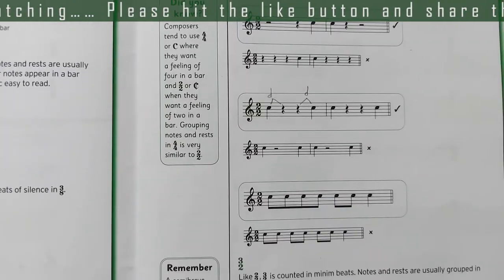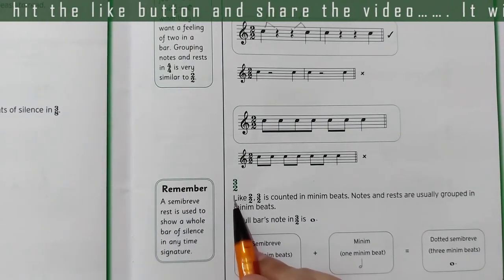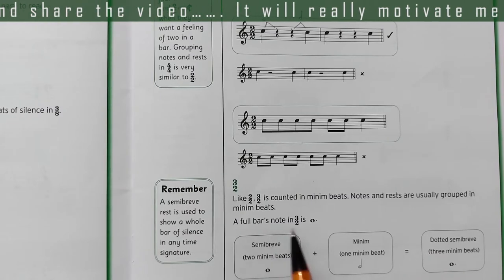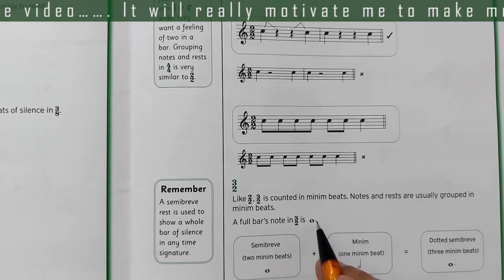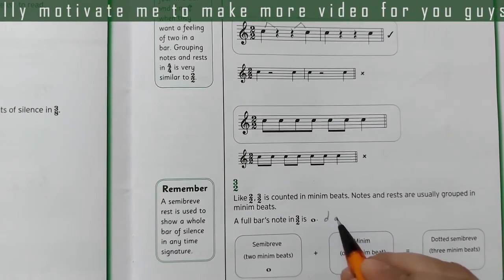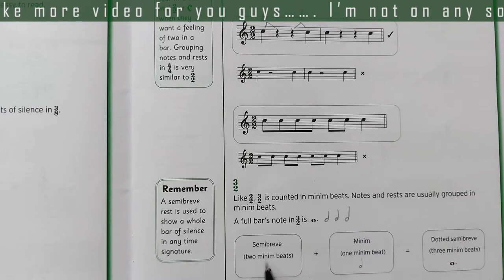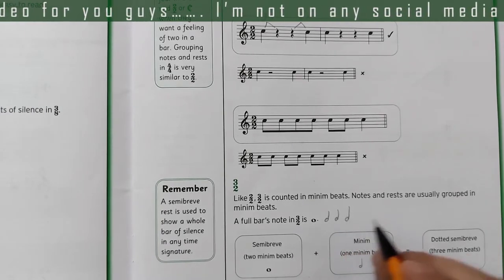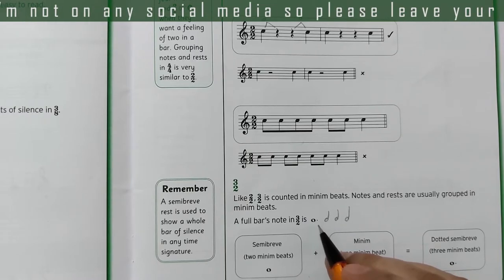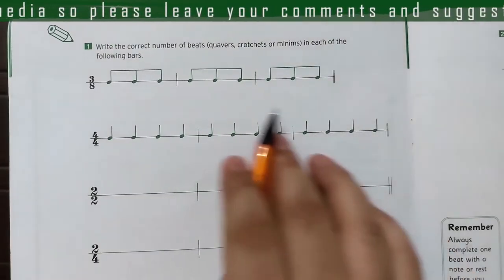There is one more: three by two. As I mentioned earlier, three by two can be shown as a dotted semibreve, because a dotted semibreve equals three minims in one bar. So this time signature can be written either with three minim notes or with a dotted semibreve note.